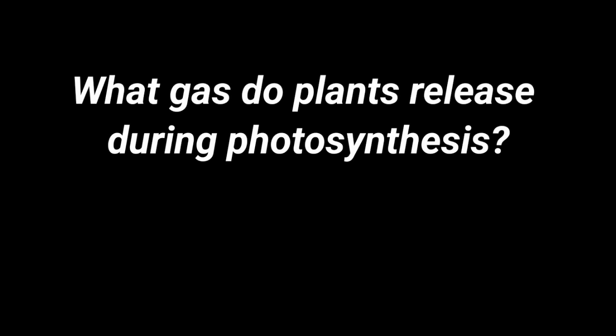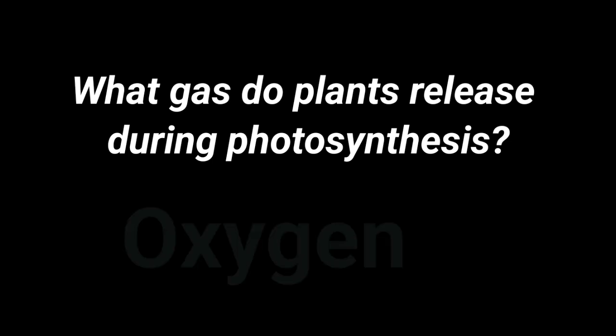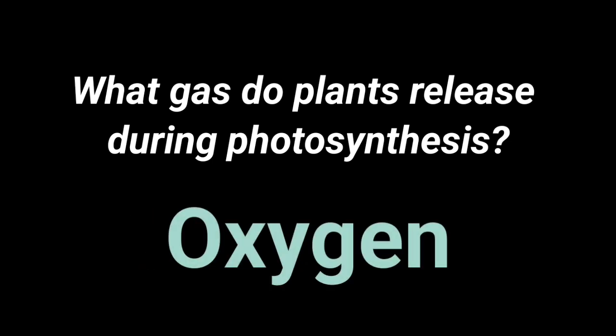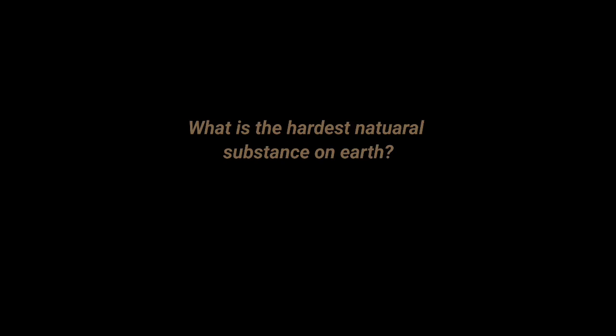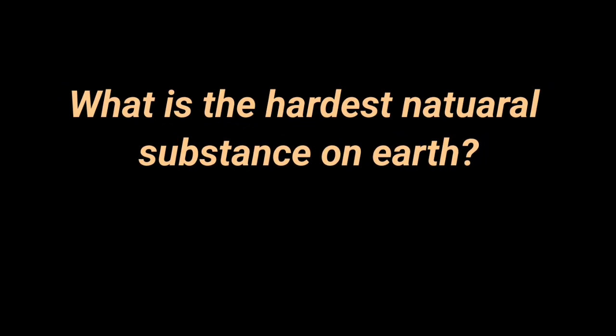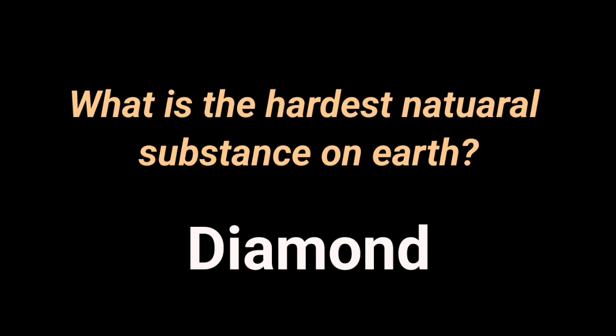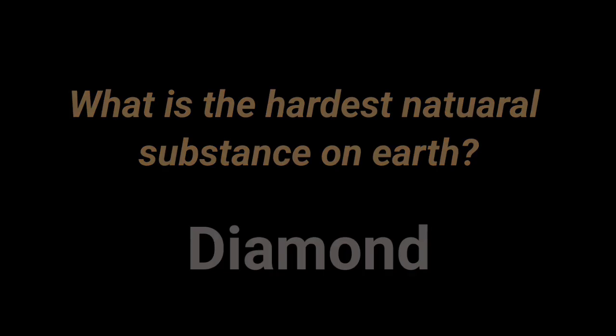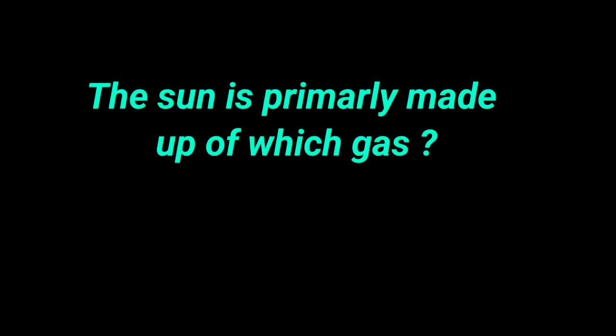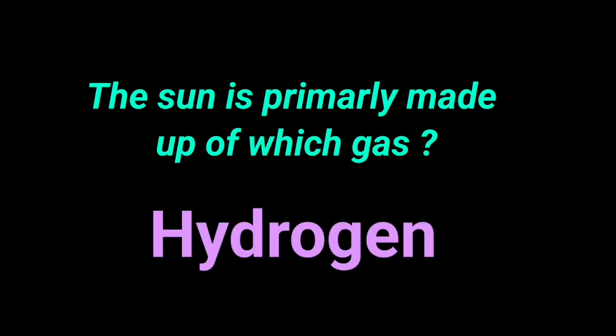What gas do plants release during photosynthesis? Oxygen. What is the hardest natural substance on Earth? Diamond. The sun is primarily made up of which gas? Hydrogen.